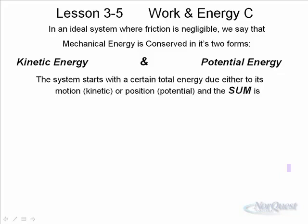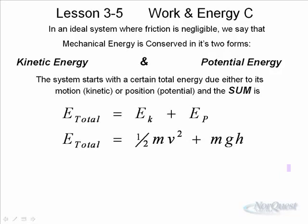The system starts with a certain total energy due to either its motion or its position. For example, a swing at the playground is a good example of a mechanical system where the energy is either, if the swing is moving fast near the bottom, it's lots of kinetic, or if it's near the top, then it has potential. If we ignored the friction that the rider was experiencing, we could say this was an ideal mechanical system. And the energy is converting back and forth. The total energy is always the same. If you give somebody a push and then you walk away, you've given them a certain amount of total energy to start with.